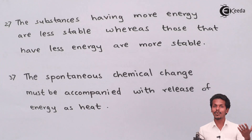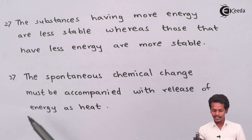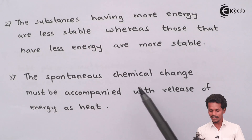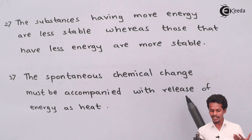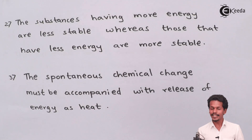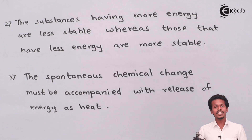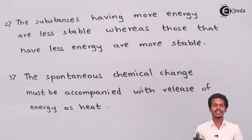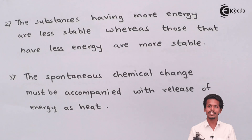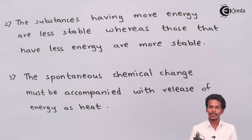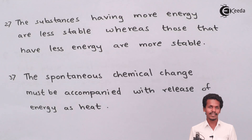The third criterion is that a spontaneous chemical change must be accompanied by the release of energy as heat. If energy has been released, it means the products are more stable. We can illustrate this with a graph.